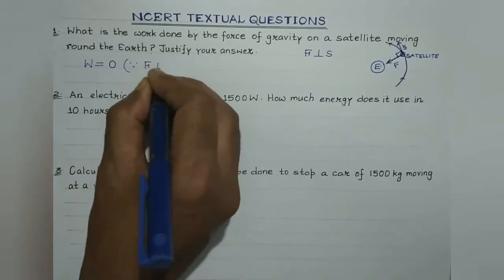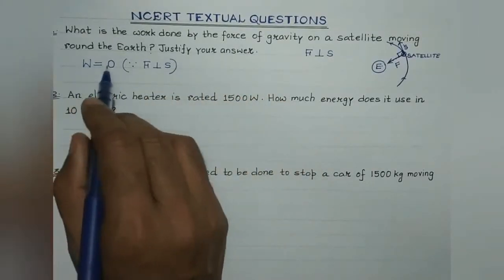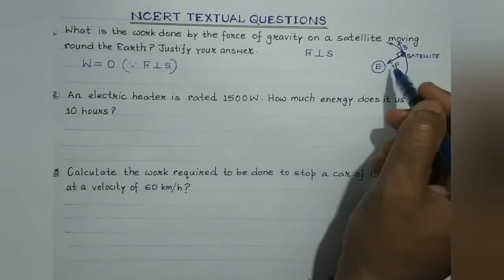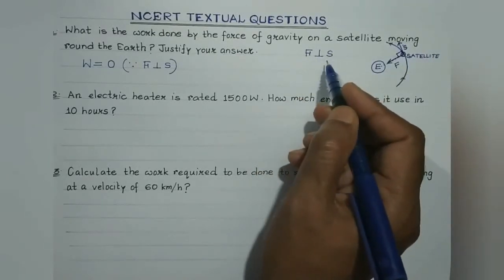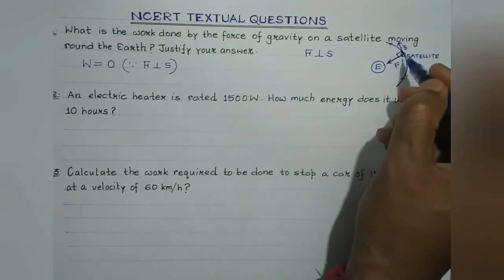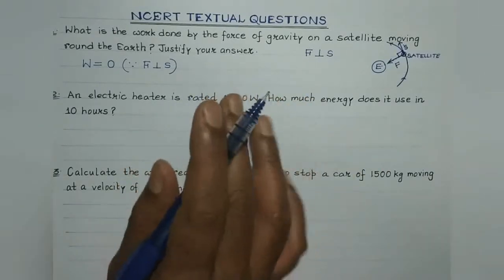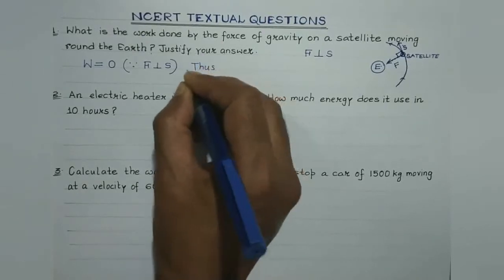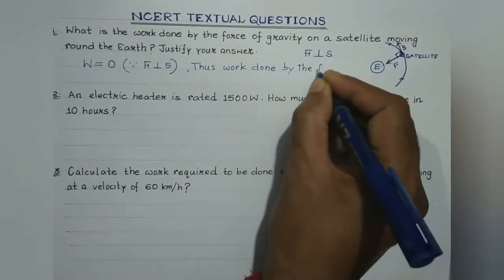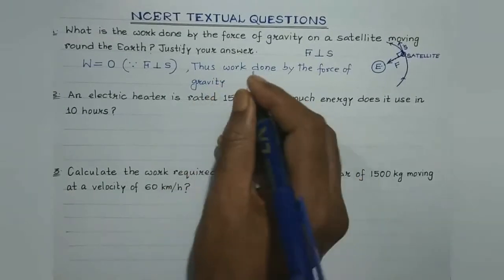Since force is perpendicular to the displacement, whenever the body gets displaced in a direction perpendicular to the direction of the force applied, no work is done. So in this case, since the tangent is always perpendicular to the radius, the displacement and the force are perpendicular to each other. There is no displacement of the satellite in the direction of the force, and therefore work done by the force of gravity on the satellite is zero.